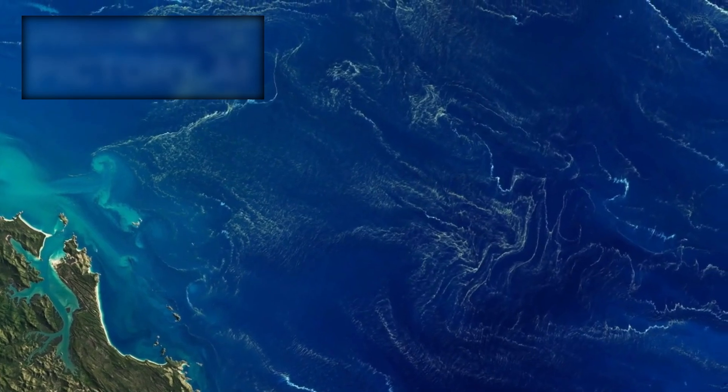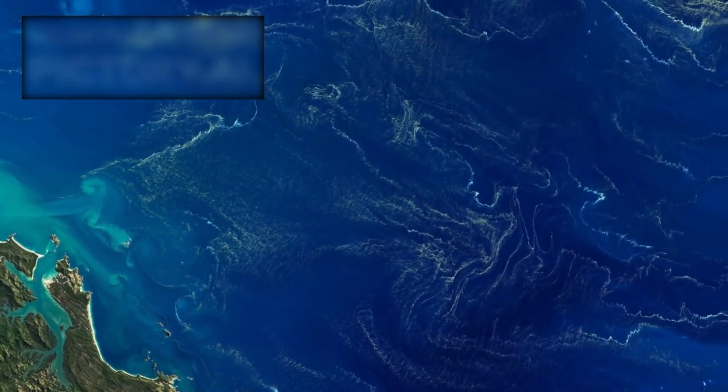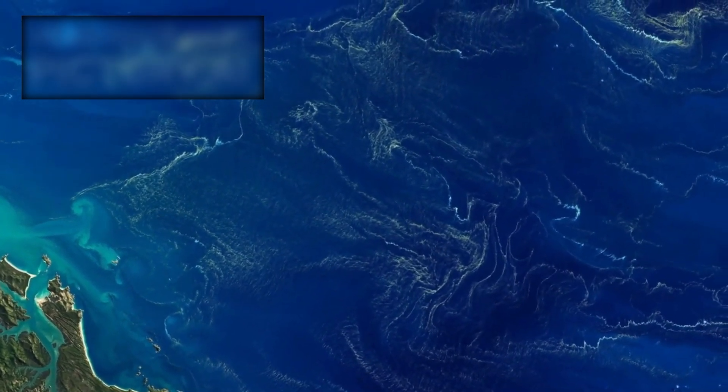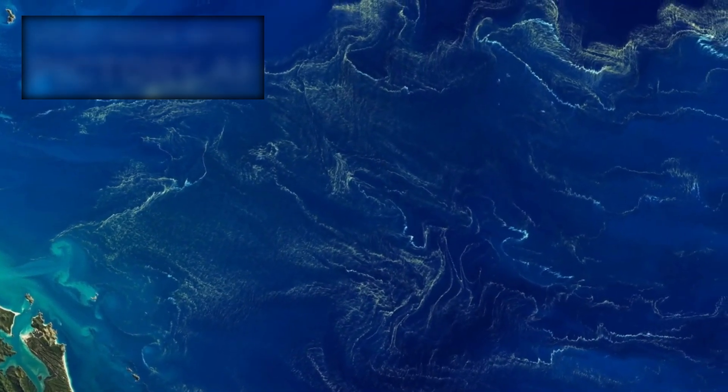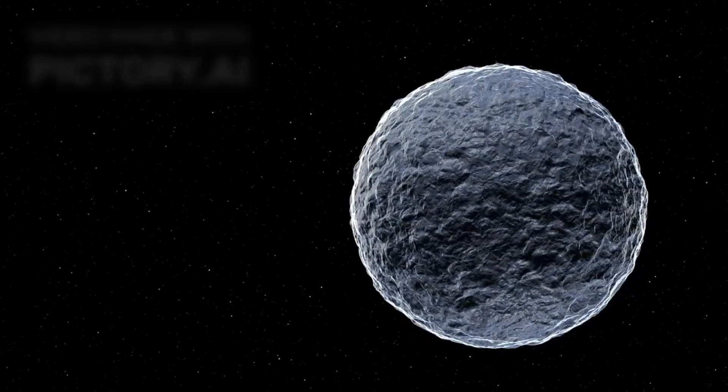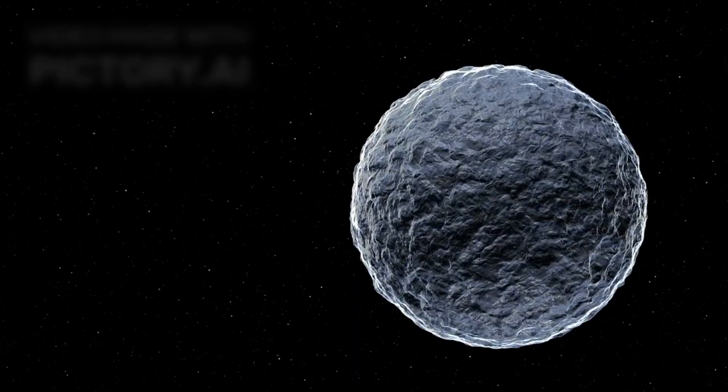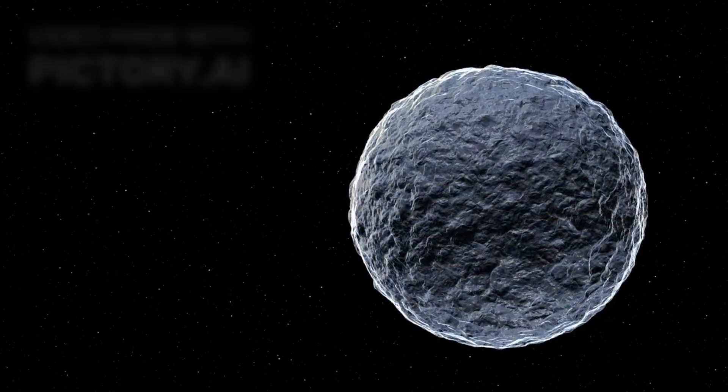Far from being a barren ice ball, Pluto may harbor environments capable of sustaining biology, albeit in ways radically different from Earth's familiar habitats. Water is essential for life as we know it, and wherever there is water, the potential for life follows closely behind.